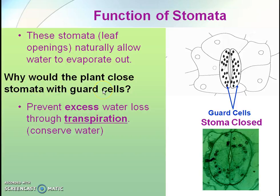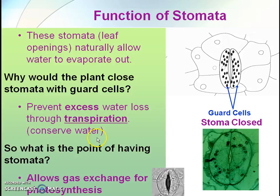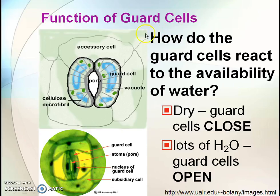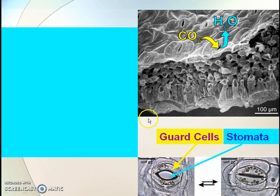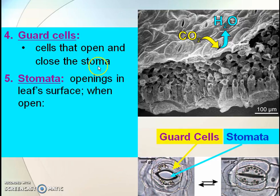Why would the plant close stomata with guard cells? To prevent excess water loss through transpiration and conserve water. So what is the point of having stomata? All the gas exchange for photosynthesis. Guard cells are cells that open and close the stomata. Dry guard cells close, while a lot of water molecules in the guard cells causes the stomata to open.